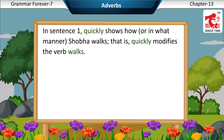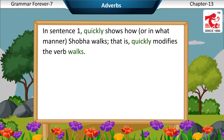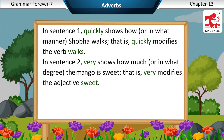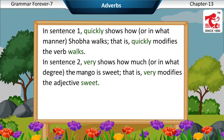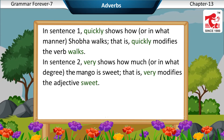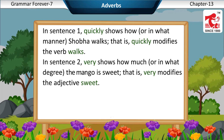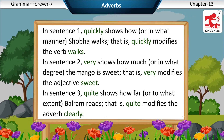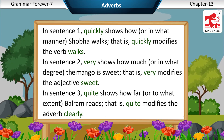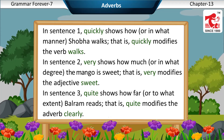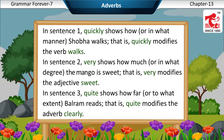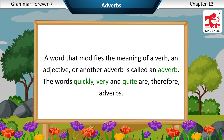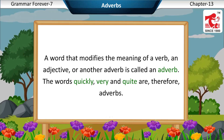In sentence 1, 'quickly' shows how or in what manner Shobha walks — quickly modifies the verb 'walks'. 2. 'Very' shows how much or in what degree the mango is sweet — very modifies the adjective 'sweet'. 3. 'Quite' shows how far or to what extent Balram reads — quite modifies the adverb 'clearly'. A word that modifies the meaning of a verb, an adjective, or another adverb is called an adverb.